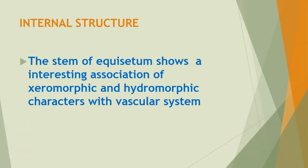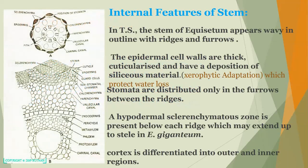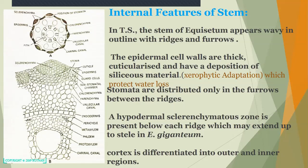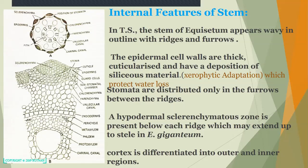The stem of Equisetum shows an interesting association of xeromorphic and hydromorphic characters — they possess both xerophytic and hydrophytic characters. In transverse section, the stem appears wavy in outline with ridges and furrows. The epidermal cells are thick and cuticularized with a deposition of siliceous material, which is a xerophytic adaptation protecting the plant from water loss. Stomata are distributed only in the furrows between the ridges.